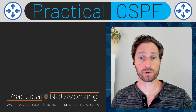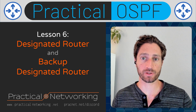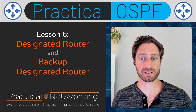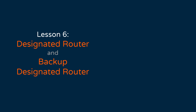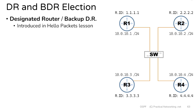Welcome to Lesson 6 of the Practical OSPF series. In this lesson, we're going to pick apart the concepts of the designated router and the backup designated router. We first mentioned these concepts back in Lesson 3 when we discussed hello packets. In that lesson, we told you that DRs and BDRs exist to reduce redundant LSA flooding.